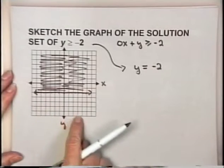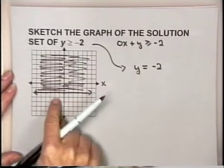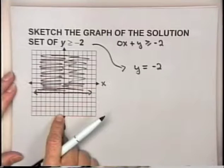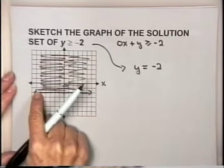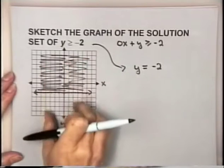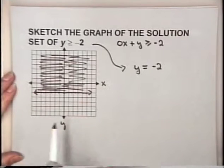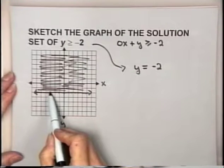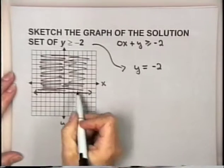Any point below the line y equals negative 2 has a y-coordinate less than negative 2, such as negative 3 or negative 4. When you change your inequality to an equal sign, you get what we call a boundary line. That boundary line divides the coordinate plane into two regions. All solutions will be on one side or the other. In this case, solutions are all above the boundary line. Since our inequality includes the equal part, the points on the boundary line are also part of the solution set.